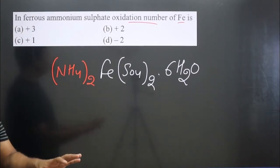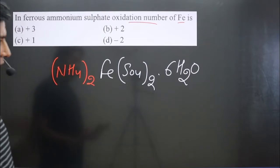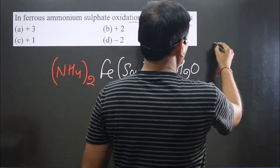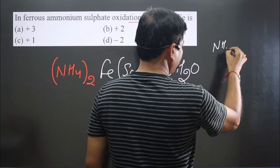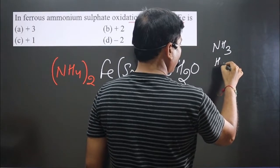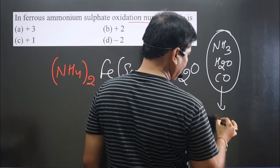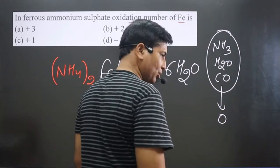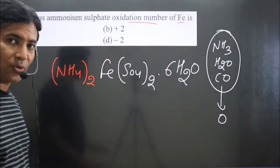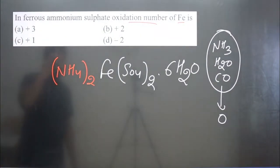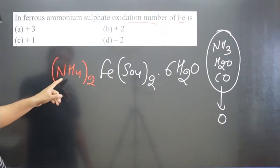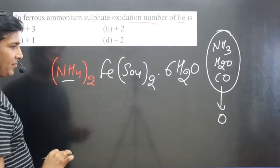Always keep in mind, in any compound if ammonia molecule is there, water molecule is there, or carbonyl group is there, any of these molecules are considered as neutral. They always show zero charge, zero oxidation number.